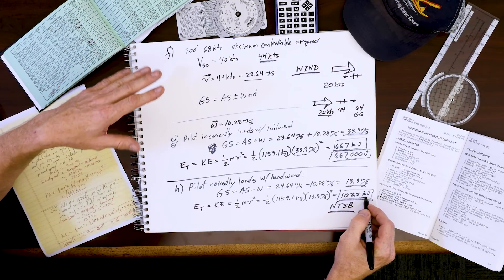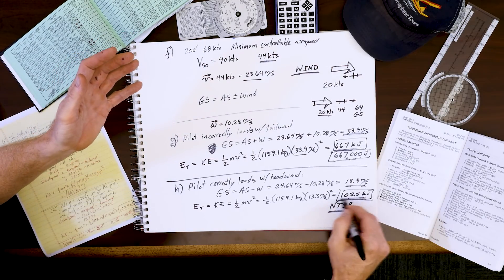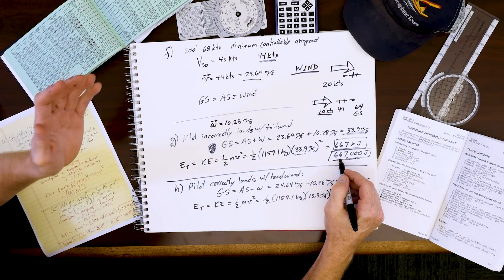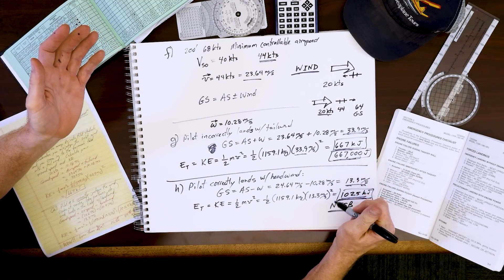A lot less energy could mean minor injuries here compared to major injuries, paralysis, or death from a simple thing like making sure you're landing with a headwind compared to a tailwind.